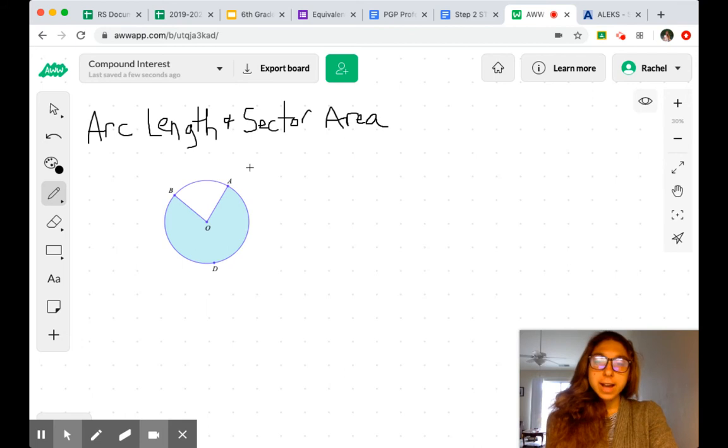What we've got here is a circle with center at O and our radius is going to be two yards. Our goal is to find the arc length of ADB, the arc length of this shaded section.